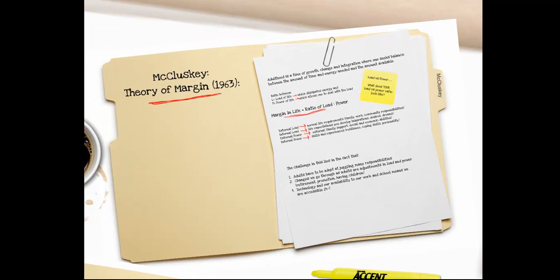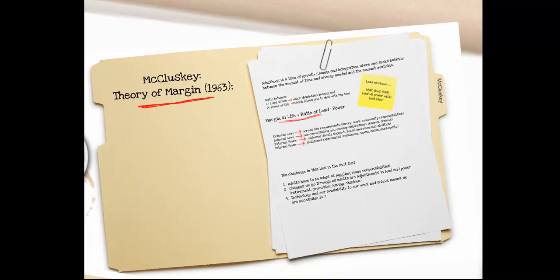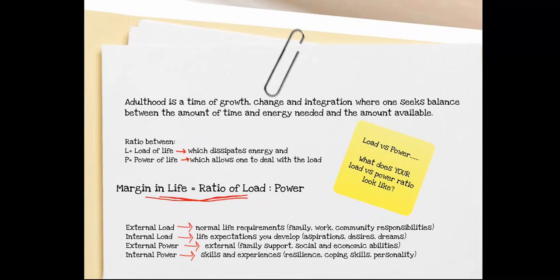McCluskey's Theory of Margin. This theory was grounded in the idea that adulthood is a time of growth, change, and integration, where one seeks balance between the amount of time and energy needed and the amount available. There's a ratio between the load of life, which dissipates energy, and the power of life, which allows one to deal with the load. Thus, the margin in life equals the ratio of load to power.